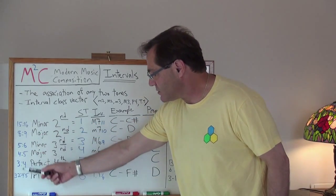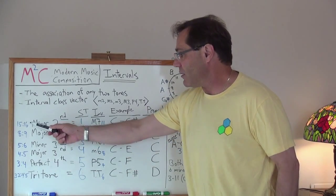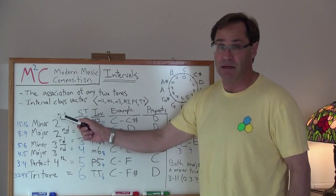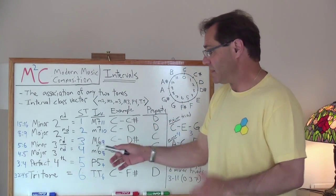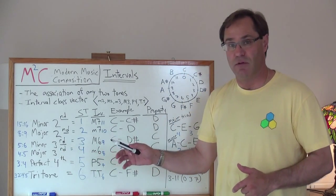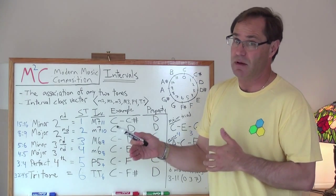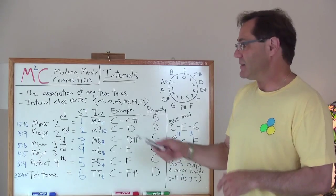Over here I actually have the ratios. You've seen these before in previous videos. What these are are the mathematical ratios associated with that particular interval. And you now understand that the smaller the ratio, the more consonant that interval is going to sound. The larger the ratio and the larger the numbers become in the ratio, the more dissonant it's going to sound. So let's just go through it.